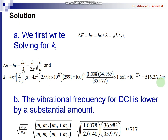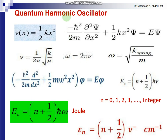If you replace H with deuterium, the reduced mass increases, so the vibrational frequency should decrease. To find the shift, you take the square root of the ratio of the reduced mass of HCl to the reduced mass of DCl, giving a corresponding shift in frequency.